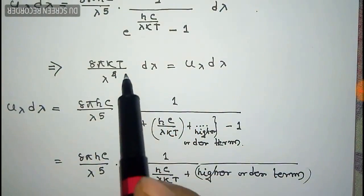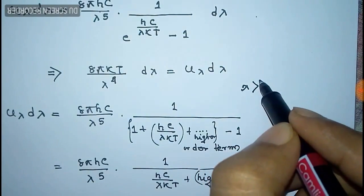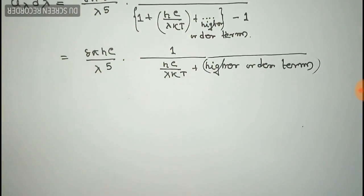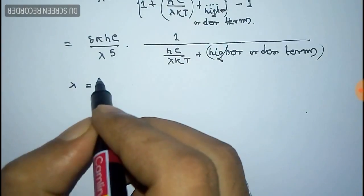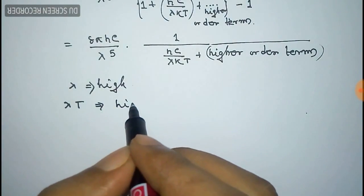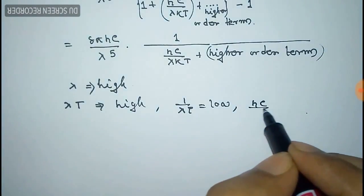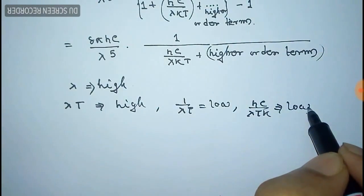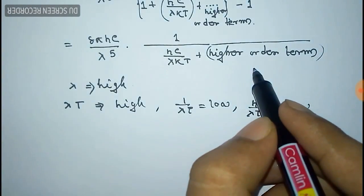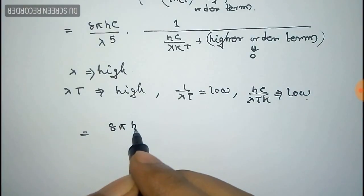Note that the Rayleigh-Jeans law is only valid for higher values of wavelength λ. When λ is very large, λT is also large, so 1/λT is low, meaning hc/λkT is very small. Therefore we can neglect and omit the higher order terms of the expansion as they tend to zero.